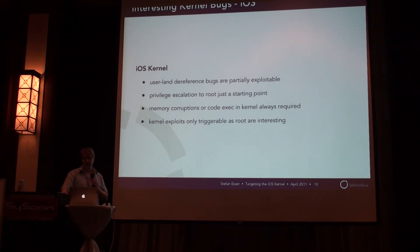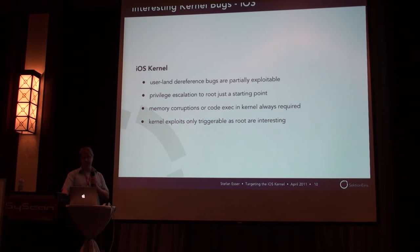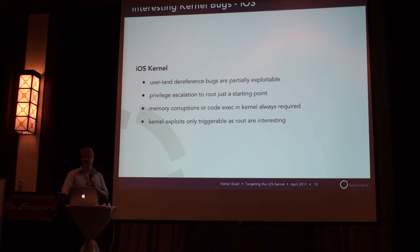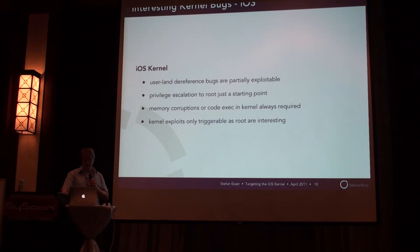UserLand dereference bugs are actually exploitable, or at least some of them. Proof of that is, for example, the previous jailbreaks. Most of them all used kernel bugs that in the end dereference code that was already in memory because the user downloaded it. These kind of attacks are not possible on OS X, but on iOS.